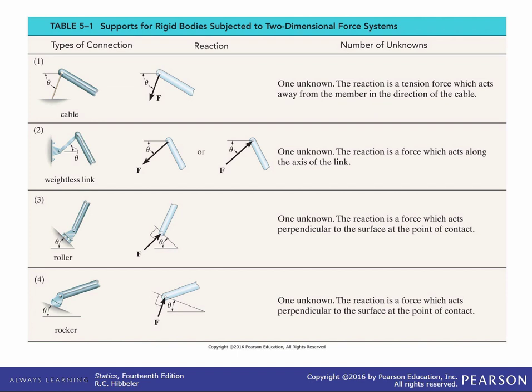This is table 5-1 in the book and I suggest you memorize all of these. They're not too difficult. We have the types of connection and the reaction forces and how many unknowns are introduced by that particular connection.